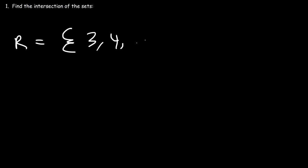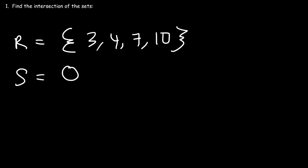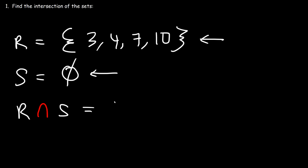Now let's say we have set R, which contains the numbers 3, 4, 7, and 10, and set S, which is basically an empty set. The intersection of a set with numbers and an empty set is going to be another empty set, or a null set. So that's it for this one.